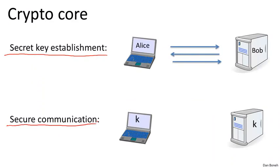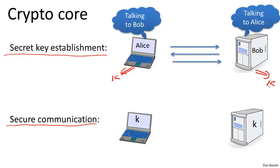Secure key establishment essentially amounts to Alice and Bob sending messages to one another such that at the end of this protocol, there's a shared key K that they both agree on. Beyond that, Alice would know that she's talking to Bob, and Bob would know that he's talking to Alice. But a poor attacker who listens in on this conversation has no idea what the shared key is.